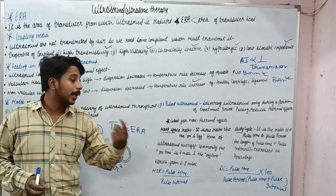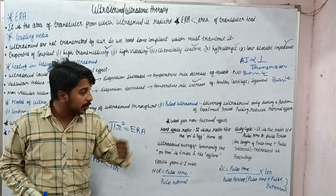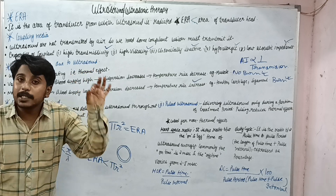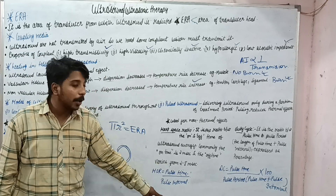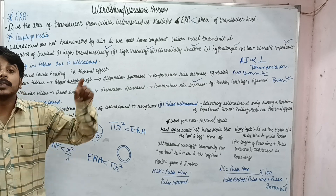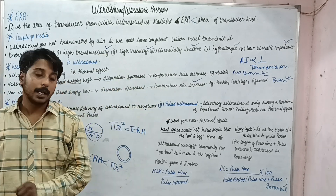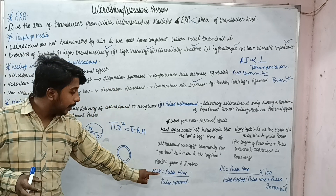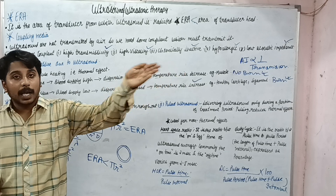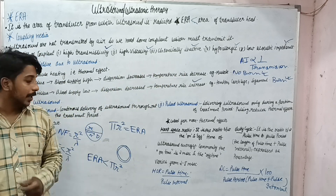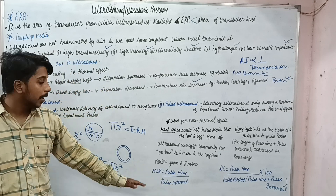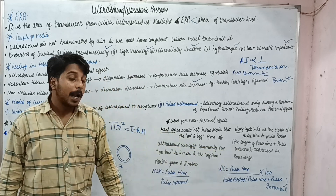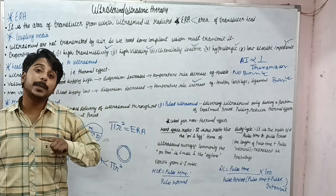In pulsed ultrasound, you need to understand two things: first is mark space ratio, and second is duty cycle. Mark space ratio is the ratio of pulse time upon pulse interval. Pulse time is the time for which the ultrasound pulse is coming; pulse interval is the time for which the ultrasound wave is not coming. So it is: time wave is ON divided by time wave is OFF.